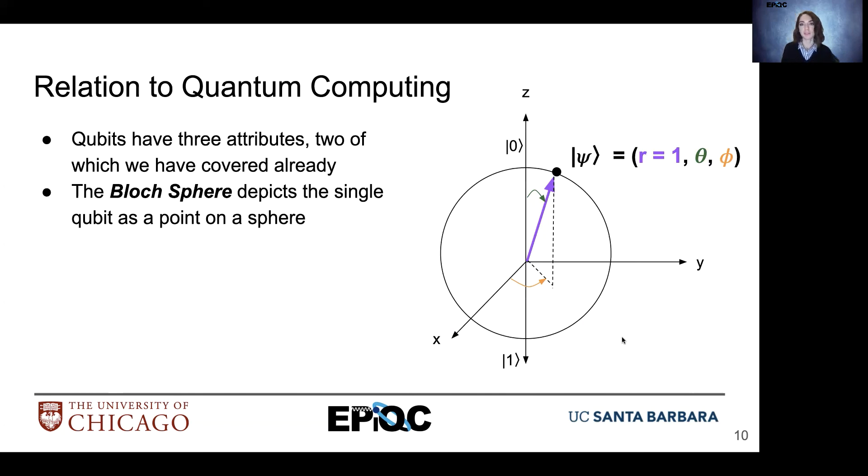So because we have this extra degree of freedom phase, we use the Bloch sphere to depict a single qubit. And our single qubit is depicted as a point on the surface of the Bloch sphere. So all valid quantum states are on the surface of the sphere. And of course, our radius is equal to one.